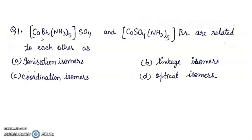First question: CoBr(NH3)5SO4 and CoSO4(NH3)5Br are related to each other as A. Ionization Isomers, B. Linkage Isomers, C. Coordination Isomers, D. Optical Isomers.